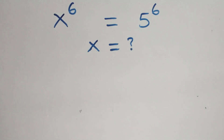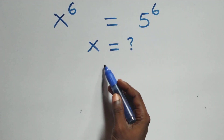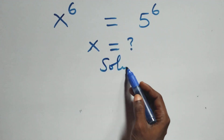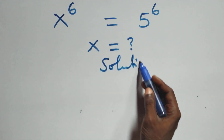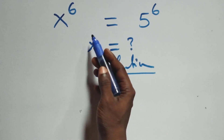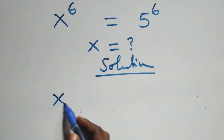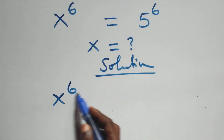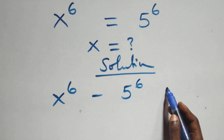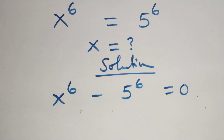Hello, you are welcome. How to solve this nice exponential equation. On what we have here, we take 5 raised to the power 6 to the left hand side, and we have x raised to the power 6 minus 5 raised to the power 6 equals to 0 on this side.